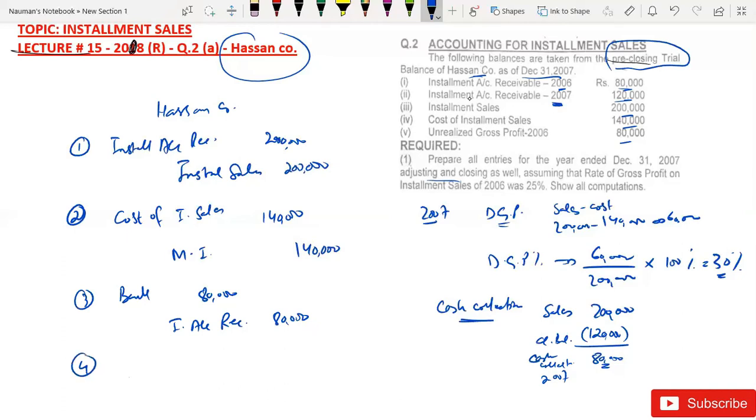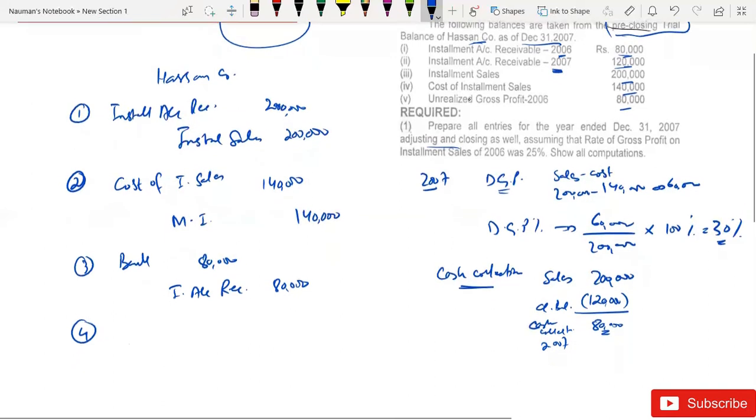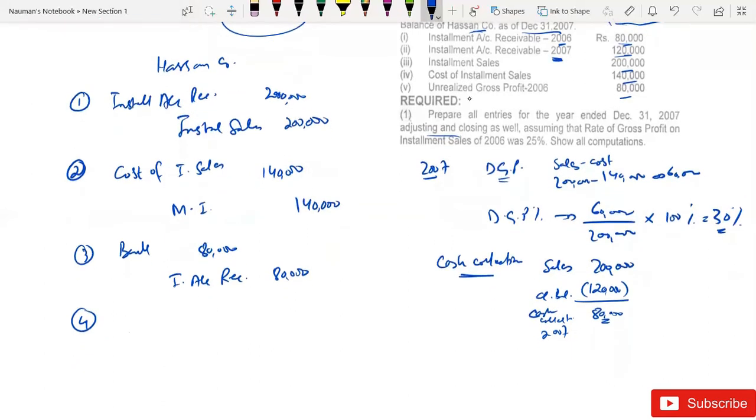After this, the problem is coming to 2006. The closing balance of 2006 is 80,000 and the unrealized gross profit of 2006 is 80,000. The balance we have discussed many times, this is pre-closing balance. The realized gross profit goes into the beginning of the year and the unrealized profit exists. This is maybe 2006 balance, the starting value was 320,000.